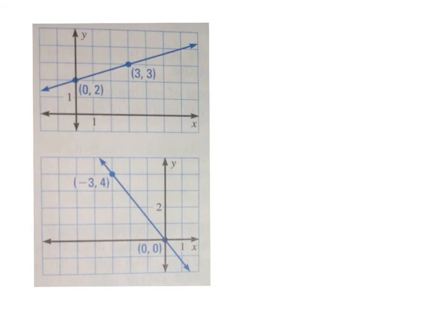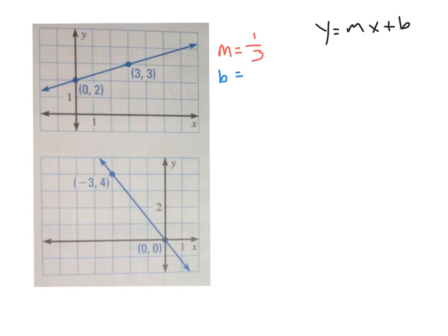Go ahead, pause the video, write down your equations for these two graphs, and then check back to see how you did. For the first graph, slope from one point to the next is up 1, right 3 — that's positive 1 over positive 3. The y-intercept crosses at 2. So the equation is y equals 1 third x plus 2.